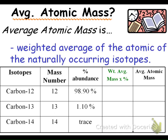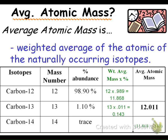The average atomic mass is the weighted average of the naturally occurring isotopes. This is how they get the decimal points on the periodic table. Carbon-12 is the most abundant isotope of carbon, but we also have carbon-13 and carbon-14. There's 1% carbon-13 and trace amounts of carbon-14. Scientists take the mass of carbon-12 times its percentage in decimal form — giving 11.868 — then add the mass of carbon-13 times its abundance — giving 0.143. When averaged, that gives the atomic mass of 12.01 on the periodic table.